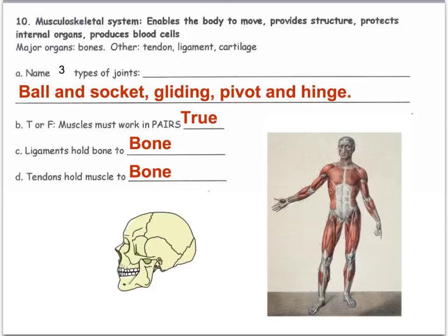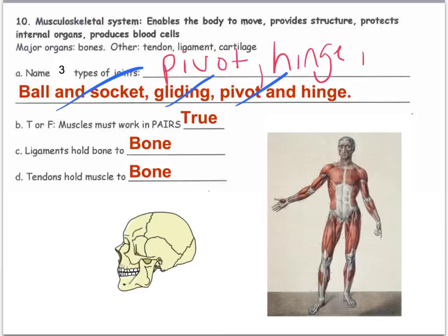The three types of joints — there's another error in my PowerPoint. The three types of joints you need to know are pivot, hinge, and ball and socket.